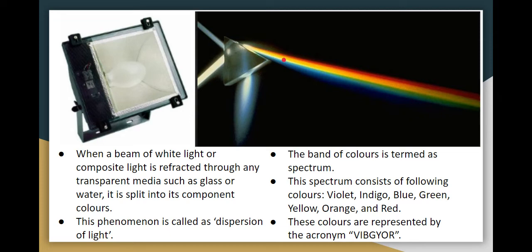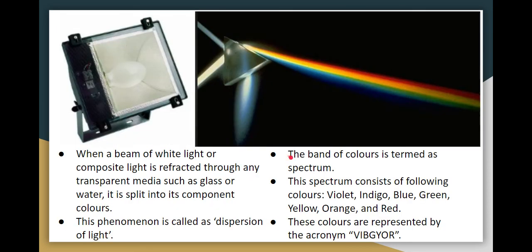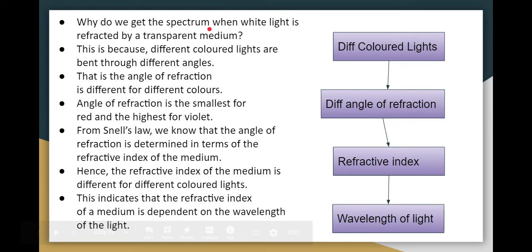If you look at red light, its refraction is less, so red appears at the higher end of the spectrum. If you look at violet, its refraction is more, so violet is at the lower end. That is why white light refracts into a spectrum when passing through a transparent medium.